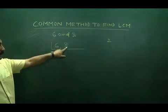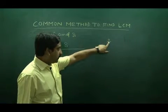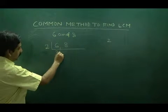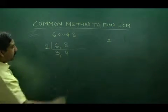6 and 8 both are divisible by 2. When we divide this by 2, here this is 3 and this is 4.